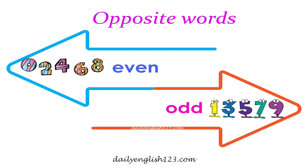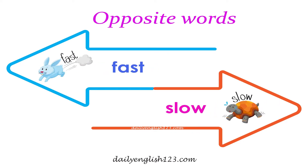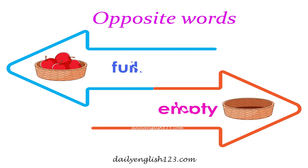Number 4: Even is the opposite of odd. Number 5: Fast is the opposite of slow. Number 6: Full is the opposite of empty.